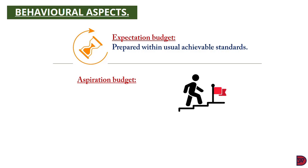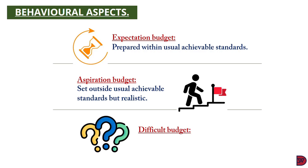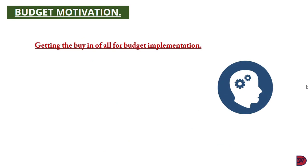The next is the aspirational budget, where the budget is prepared above the usual achievable limits of managers or staff, but not at an unrealistic level. This typically stretches staff a bit, leading to improvement in performance. The last is the difficult budget: this is set too high — beyond achievable levels — based on unrealistic or unreasonable parameters. This has a high likelihood of demotivating staff in attempting to achieve the target because they see it as impossible to accomplish.